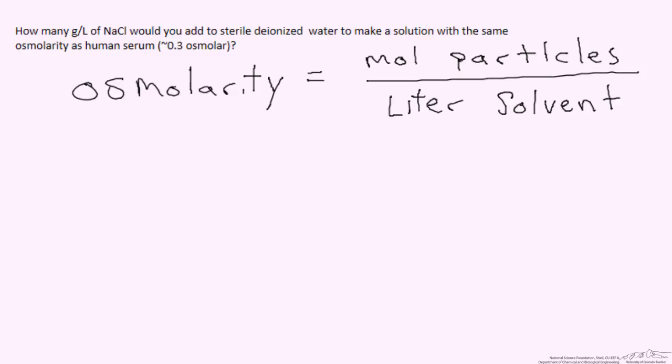In this example we're actually given the moles of particles per liter of solvent in human serum. So that's composed of all sorts of different ions, different proteins, all sorts of things in blood. But we've boiled that down to the basic concept that the concentration of particles per liter of solvent is 0.3 osmolar. So we want to figure out how much sodium chloride we'd have to add to balance that osmotic pressure, that osmolarity of the system.